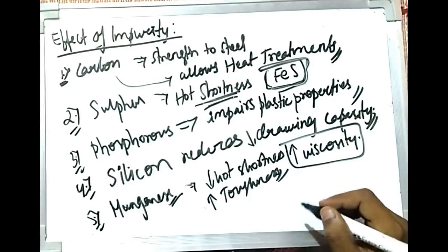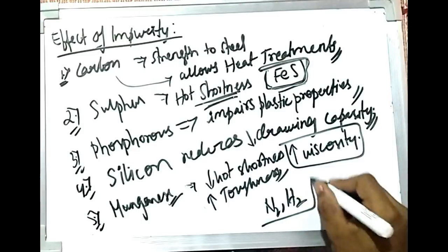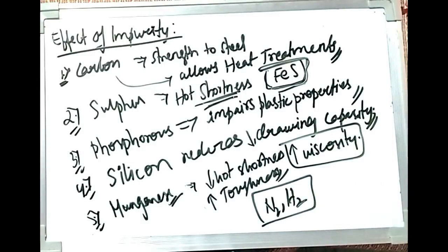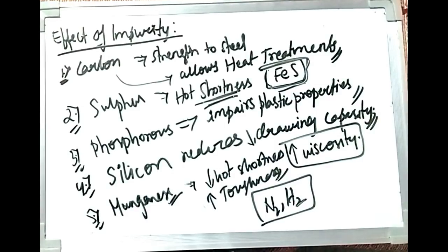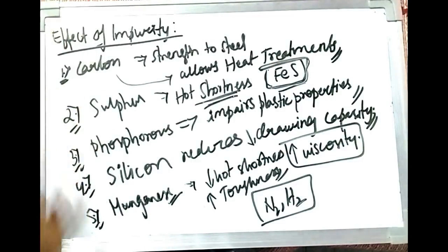Other impurities — nitrogen and hydrogen — all cause embrittlement. These gases impair the plastic properties and increase embrittlement even at low temperatures. Essentially they increase the ductile-to-brittle transition temperature (DBTT). This is the effect of gases like nitrogen and hydrogen present in the steel.